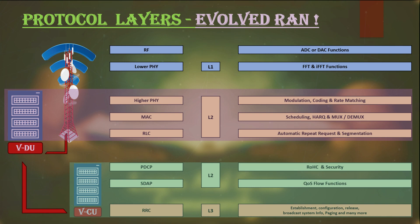The centralized unit includes the PDCP layer, handling header compression, security, and QoS flow handling. In 5G, security and QoS flow handling is managed through SDAP protocols. The centralized unit also handles the most important control layer, L3 or RRC, which manages user attachment, service access, handovers, activation, deactivation, and RRC configuration and reconfiguration.